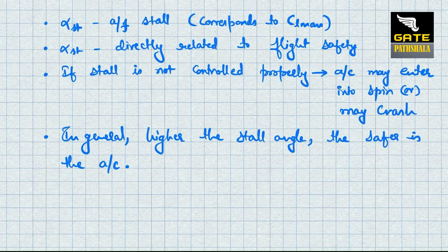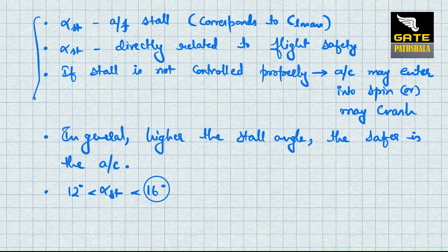Typical stall angles for the majority of airfoils lie between 12 to 16 degrees. This means the pilot is not allowed to increase the angle of attack beyond 16 degrees. Therefore, an airfoil with the highest stall angle is more desirable.